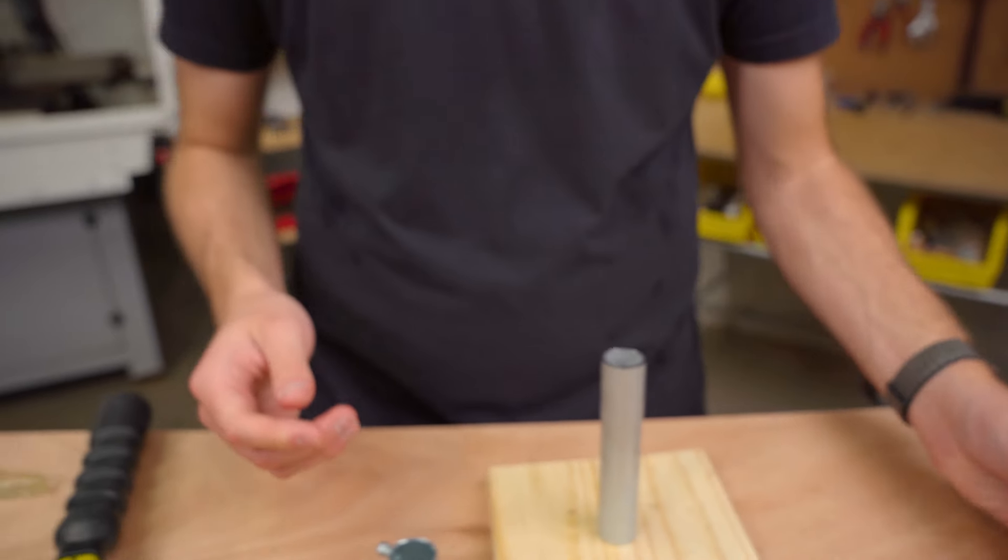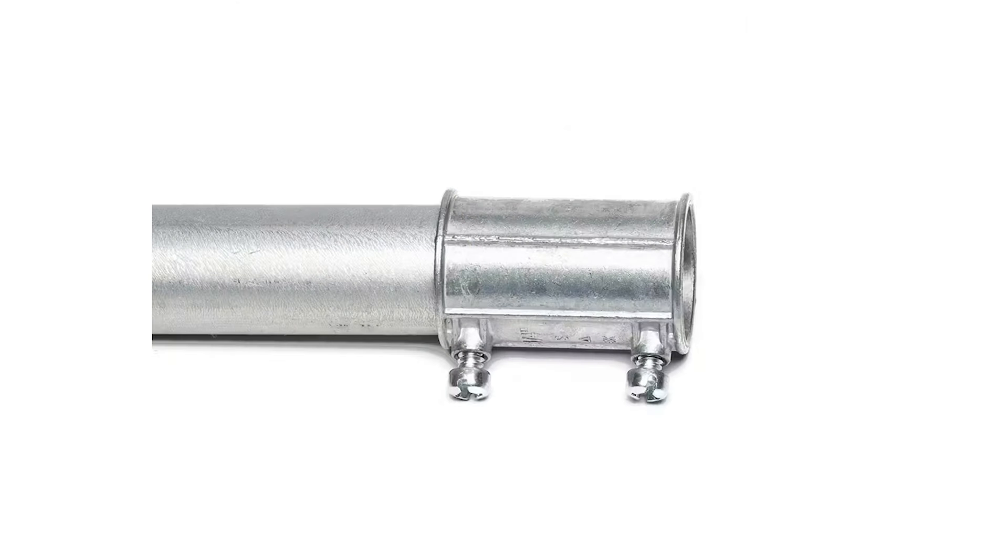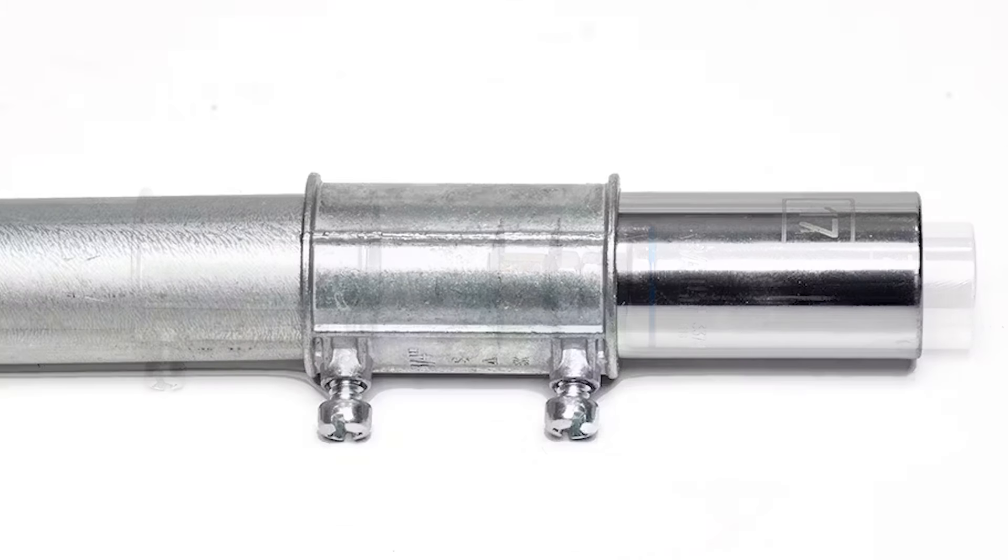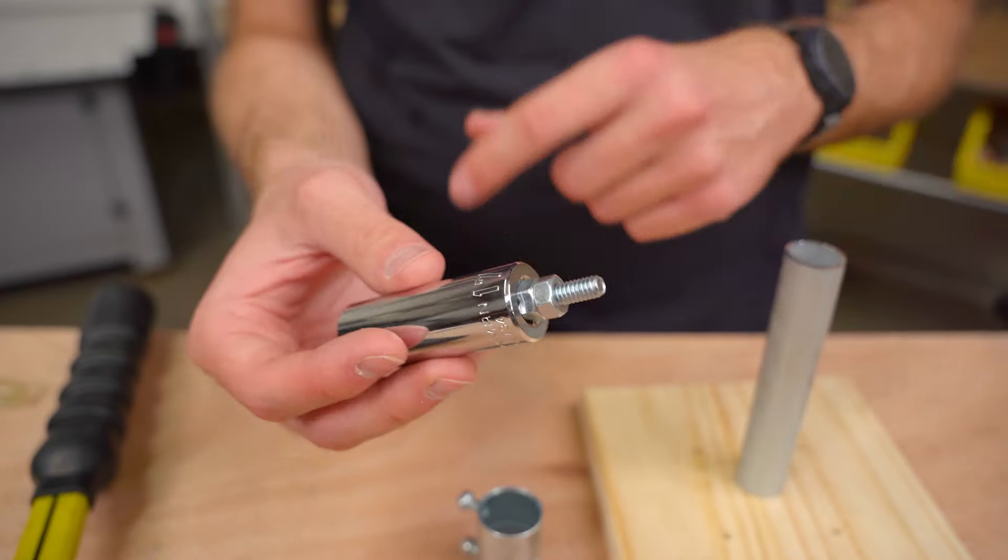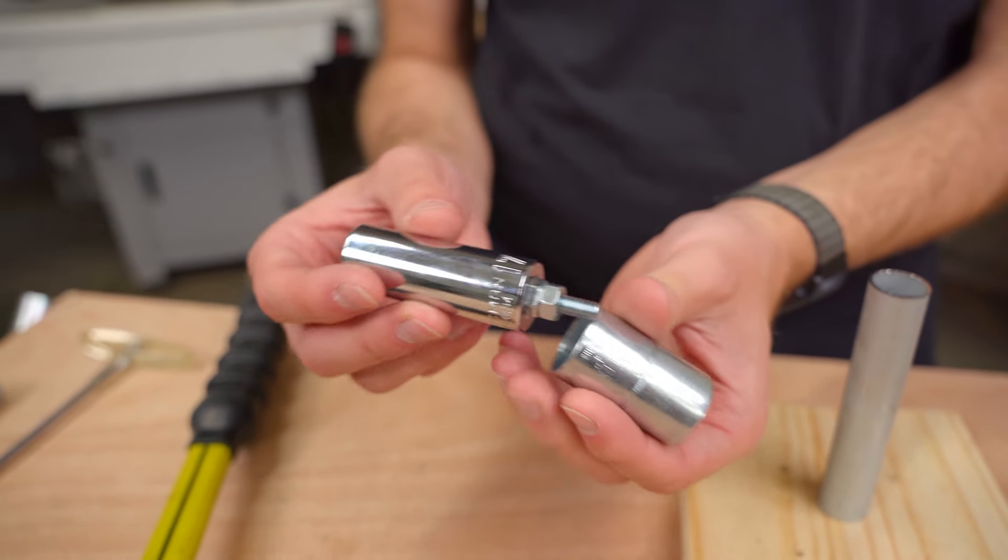But recently, we had someone in the community post this DIY version, shout out to Tetrode in the community. And what they used is a 17 millimeter socket with a 3/8 driver here. The reason they used that specific size socket is because it fits inside of the coupling.